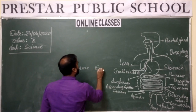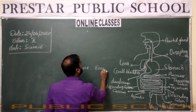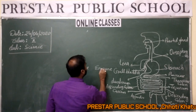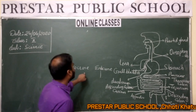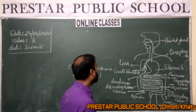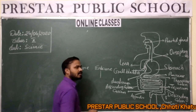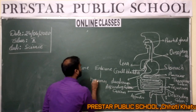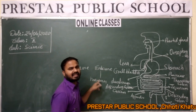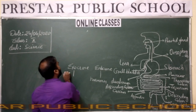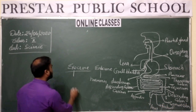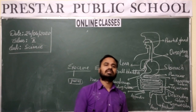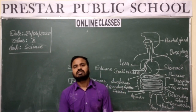Let's clarify the difference between endocrine and exocrine glands. Endocrine glands are those glands which secrete hormones. Exocrine glands secrete juices, and in those juices, enzymes are present which are good for digestion.